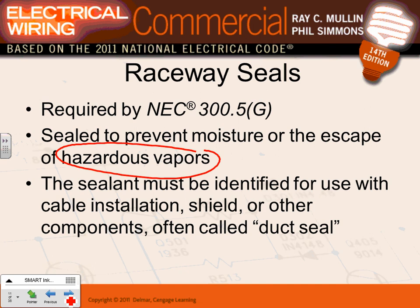When you put a sealant, the last thing you want is for the compound's chemicals to eat into the insulation of your conductor. The sealant has to be identified for the insulation type. Duct seal is a common compound used. It has to be compatible with the insulation. If you seal against water but damage your insulation, you're going to have an arc flash or short circuit.